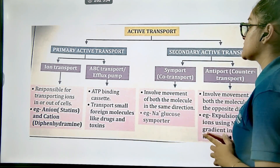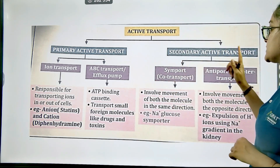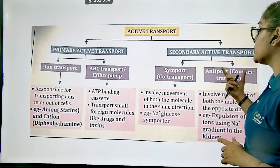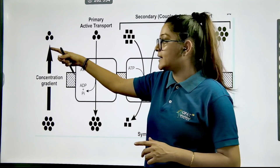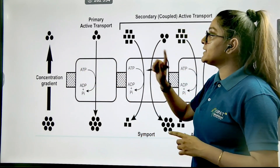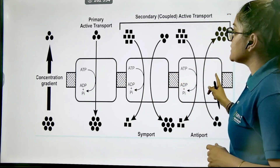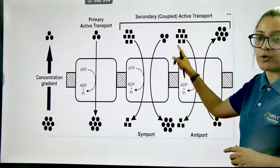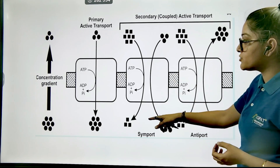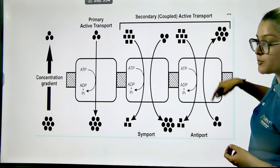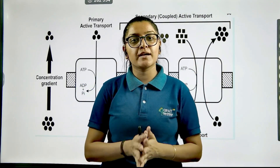Primary active transport does not require direct ATP, while secondary active transport requires direct ATP. Secondary active transport can involve both symport (co-transport, where molecules move in the same direction) and antiport (counter-transport, where movement is in reverse direction). Simple diffusion moves from high to low concentration along the gradient. In primary active transport, the process is unidirectional. In secondary active transport via symport, uphill movement is observed, indicating ATP-driven transport. That sums up passive and active transport mechanisms. In the next video we will cover carrier-mediated transport.